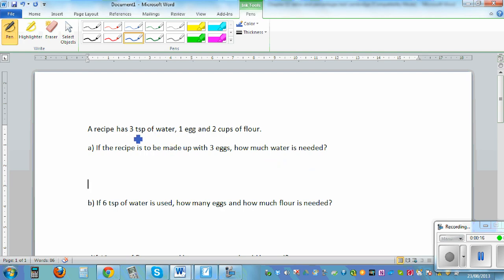A recipe has 3 teaspoons of water, 1 egg and 2 cups of flour. So let's make up 3 columns: W for water, E for egg and F for flour. So what are they saying? You have 3 teaspoons of water, 1 egg and 2 cups of flour.